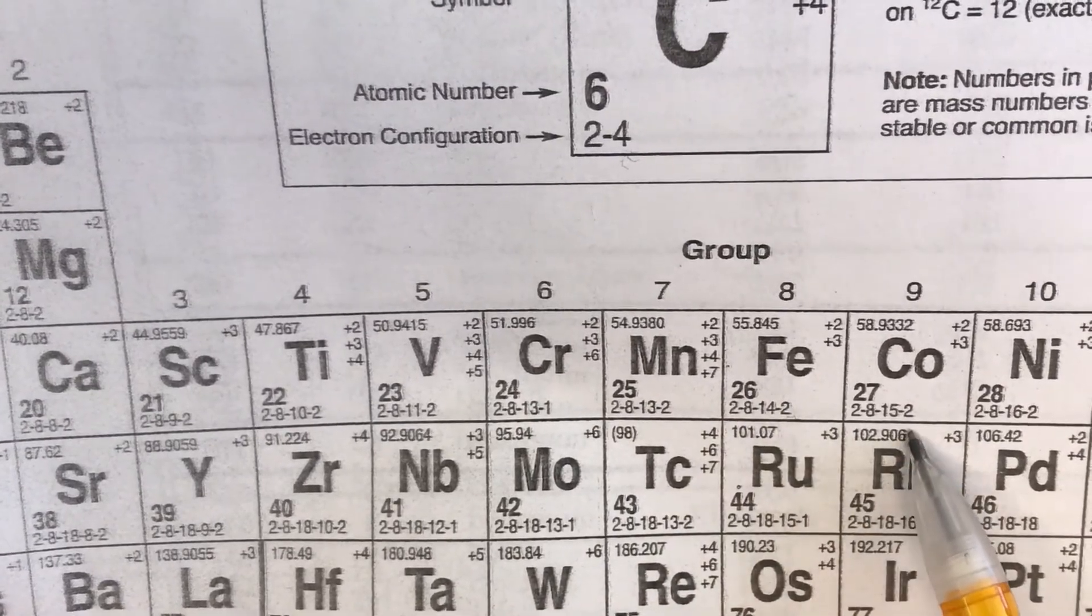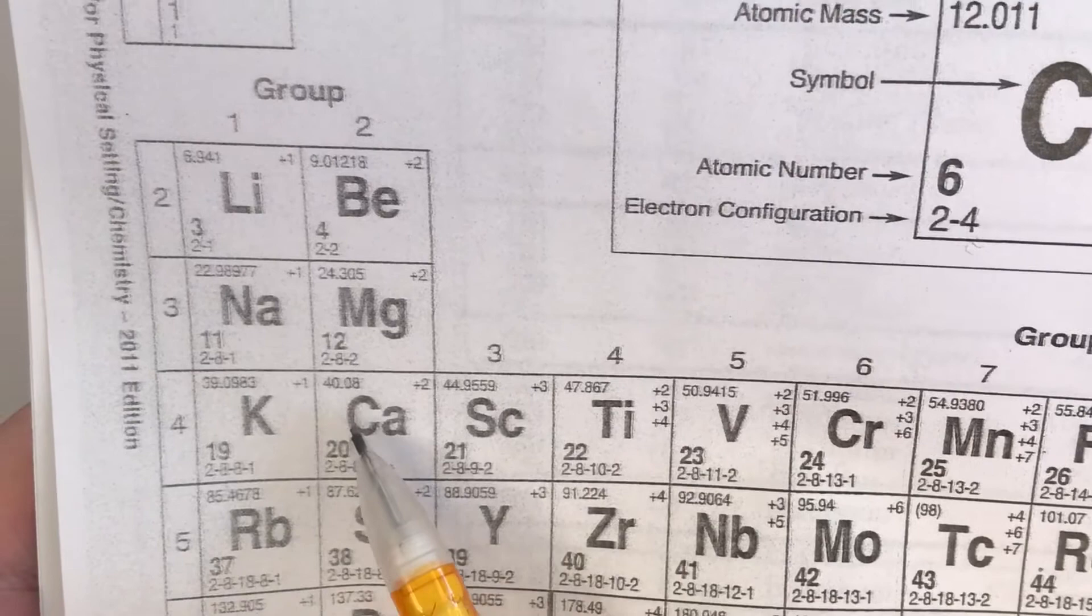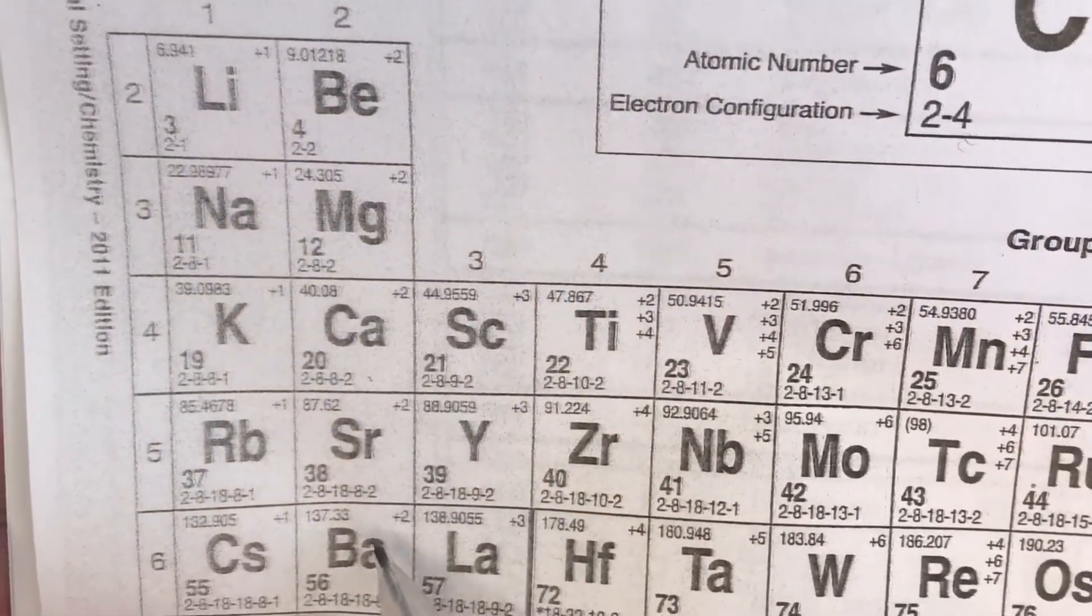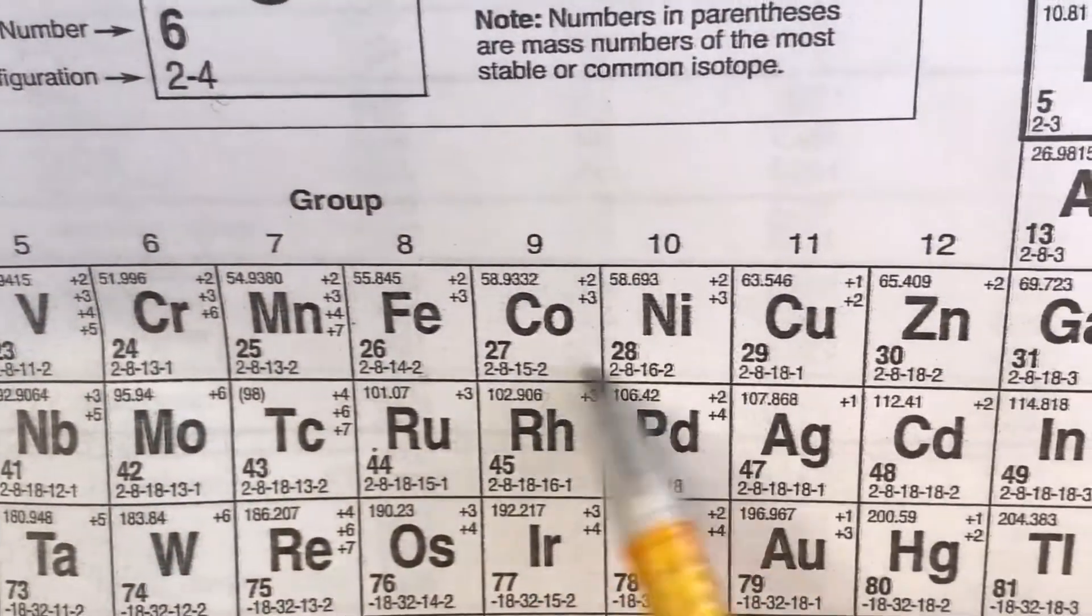For example, carbon would have four valence electrons. But if we look at iron, iron would have two electrons. Cobalt would have two electrons. If we look at calcium it has two, magnesium—anything in group two actually has two valence electrons.